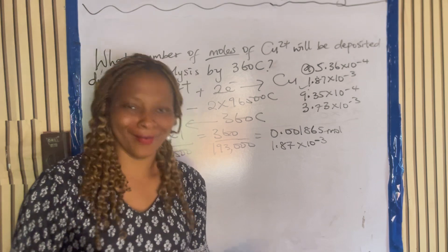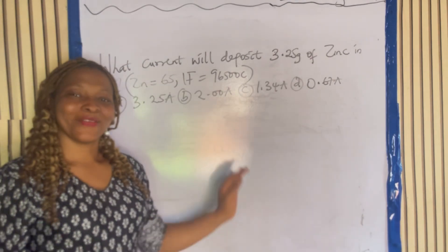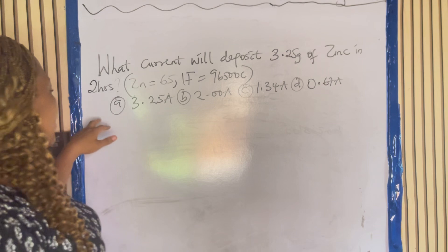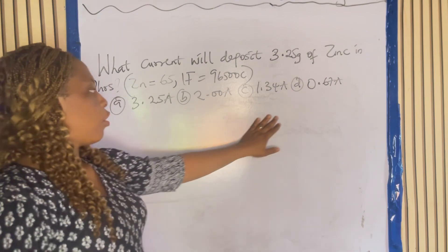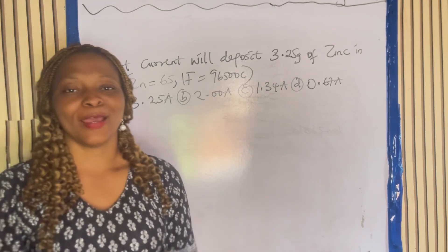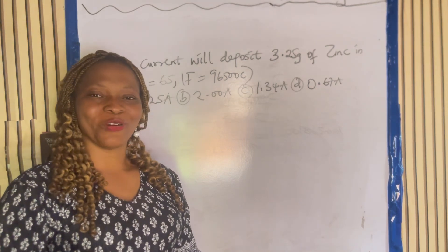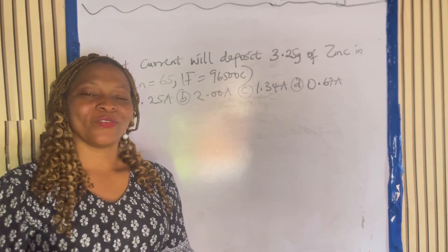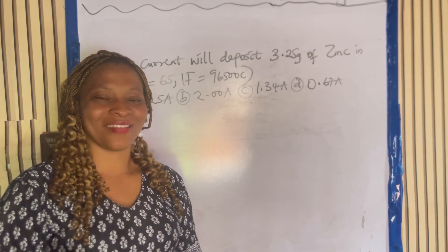I'll give you one more to solve: What current would deposit 3.25 grams of zinc in 2 hours? You have the molar mass and Faraday's constant. Solve it and put your answer in the comment section. Thank you very much for watching — please like this video so others can see it, and success in your exams!